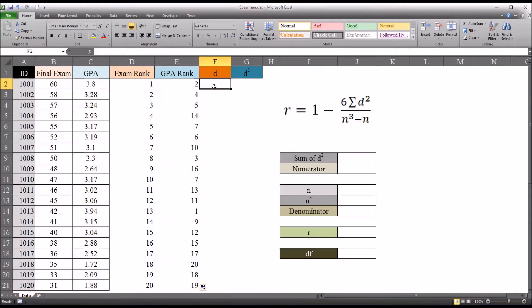For D, this will be the difference between the two ranks. So that will be equal sign 1 minus, in this case 2, or D2 minus E2. You see that's negative 1, and here we can just autofill that all the way down.